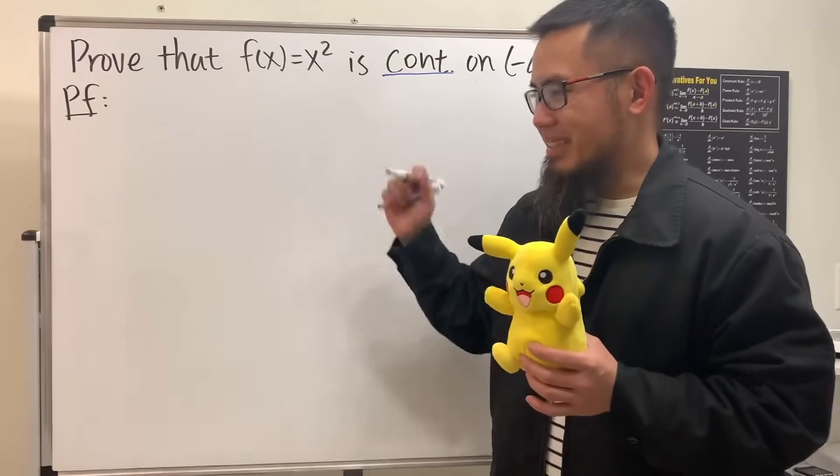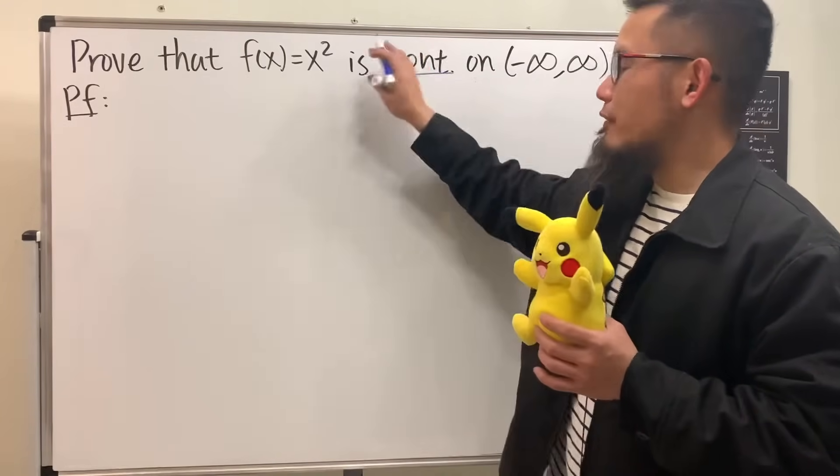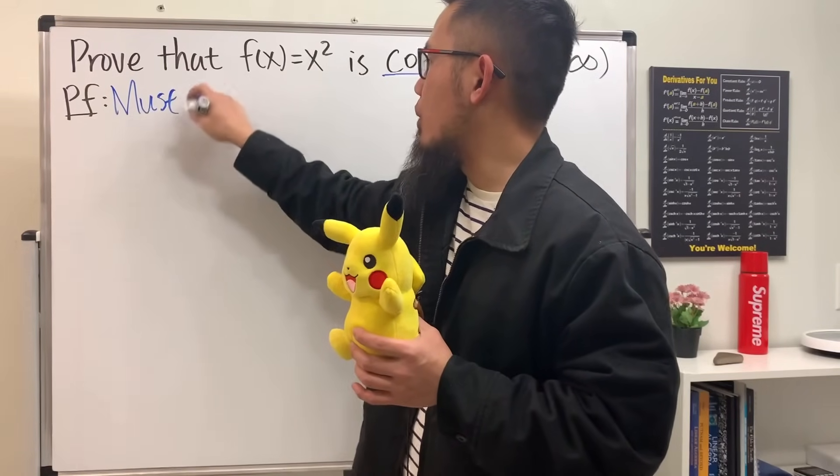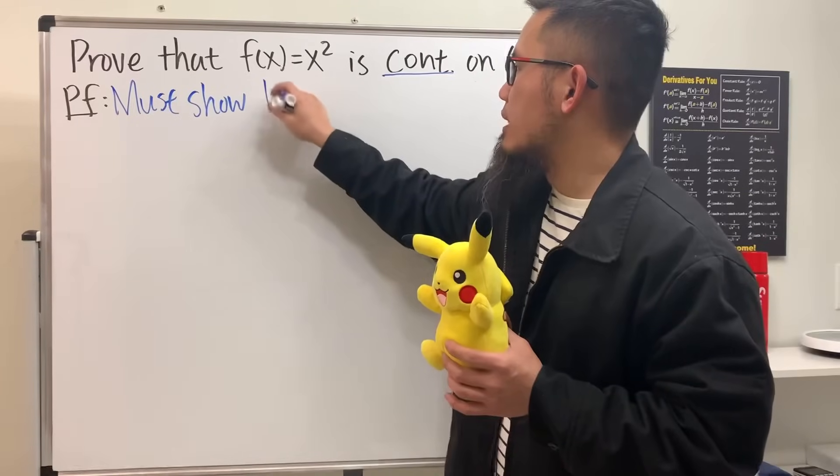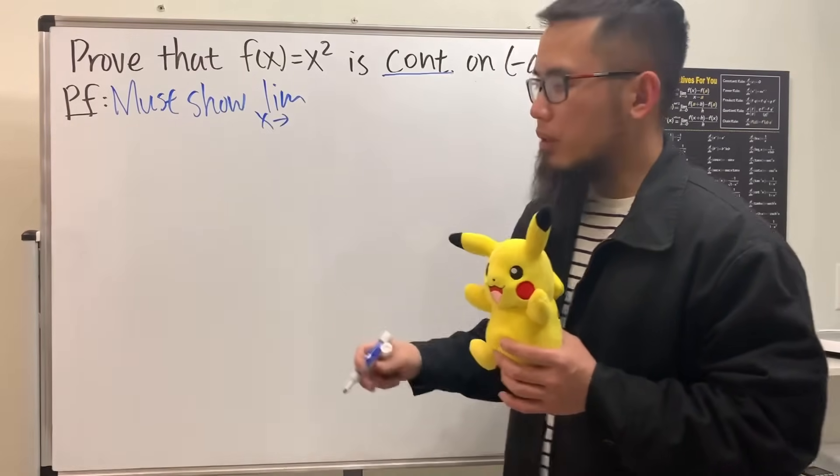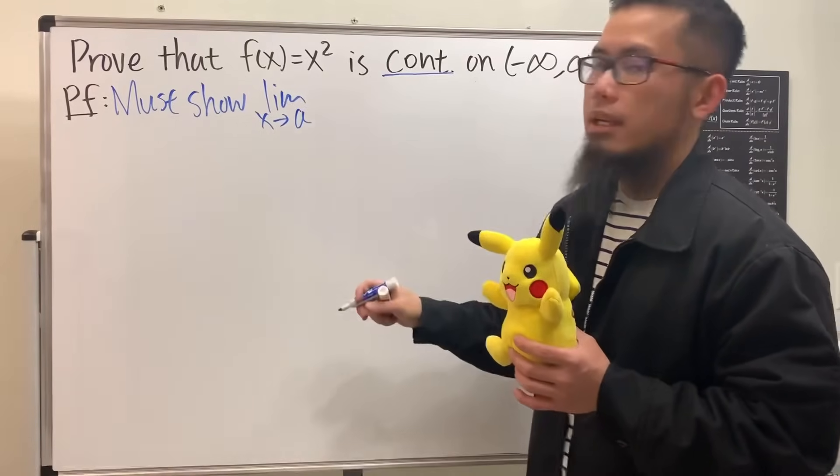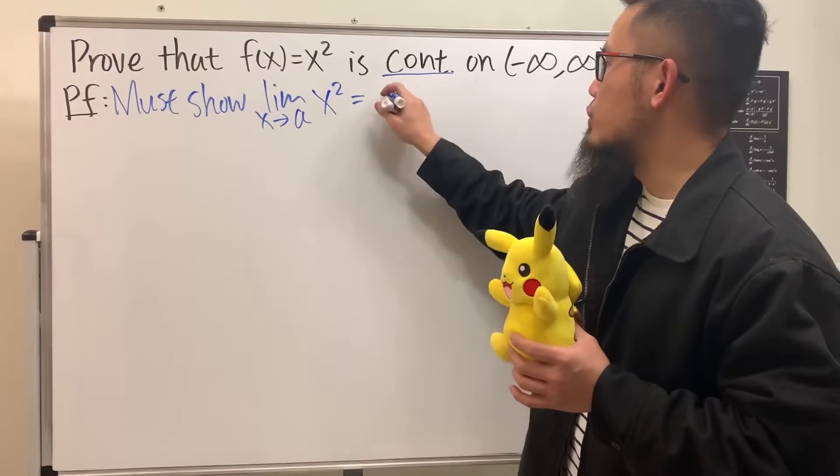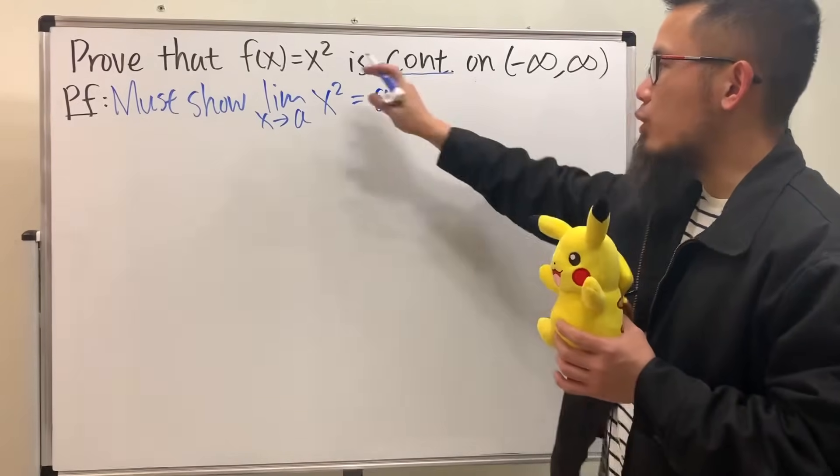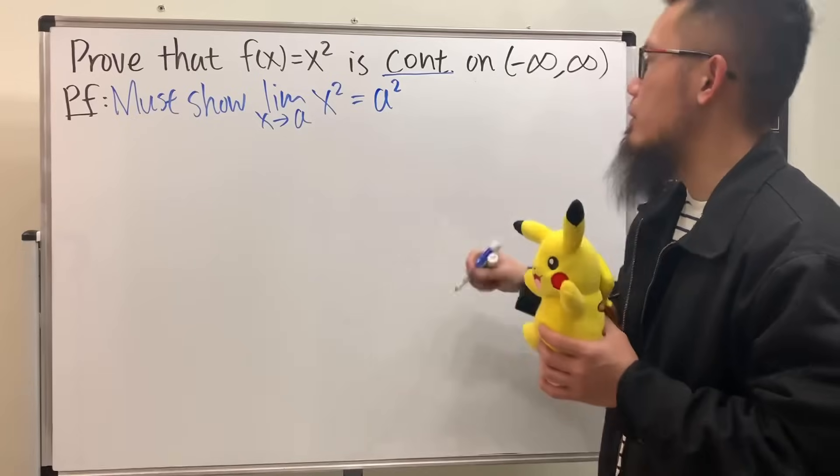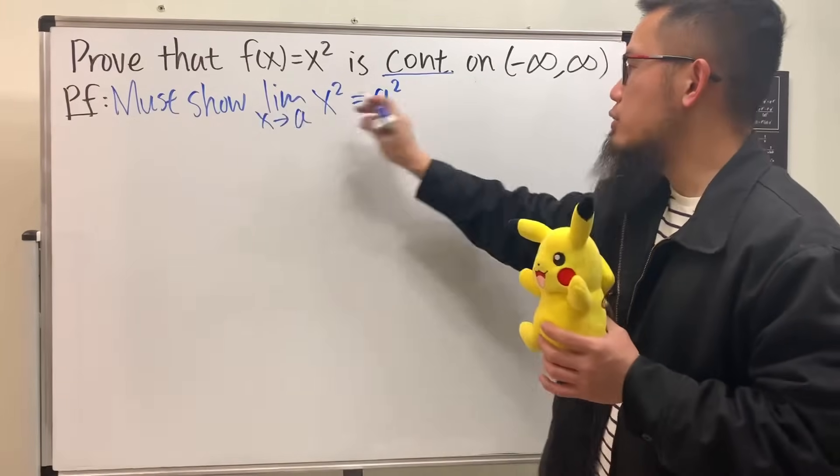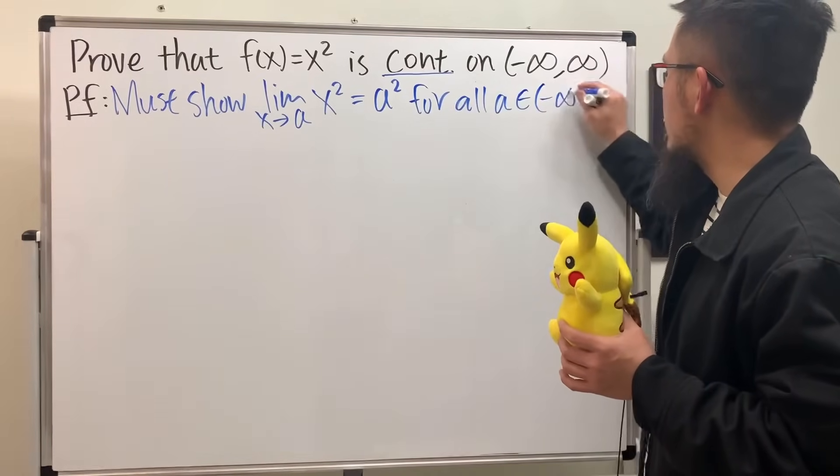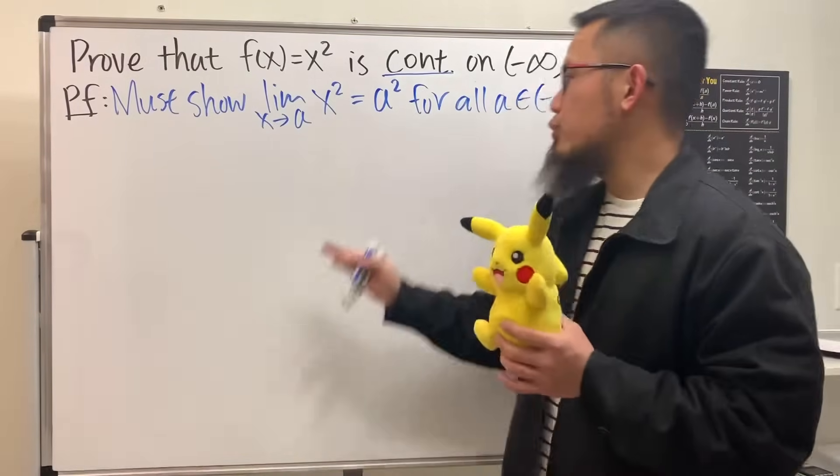All right, so now when the function is continuous, well we must show that, by definition, the limit when x is approaching some number a of the function, which is x², if the function is continuous, then all we have to do is put the a into the function, so just get a². And because we want to show that the function is continuous everywhere on its domain, we have to show that this right here is true for all a on this interval right here.